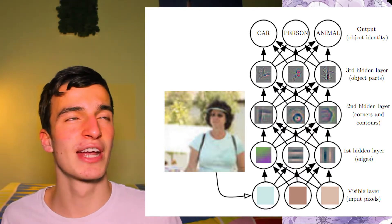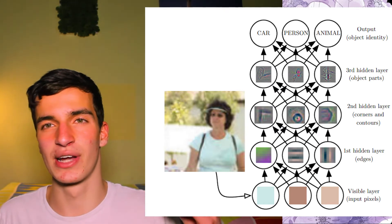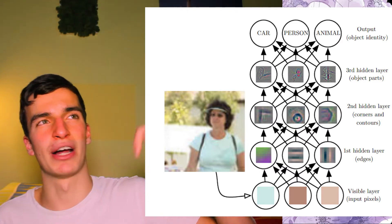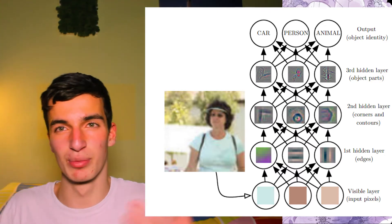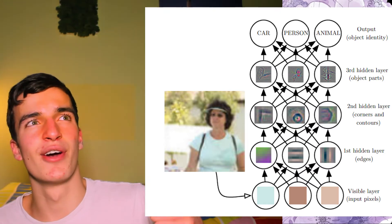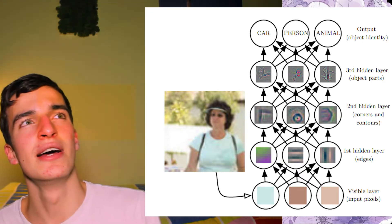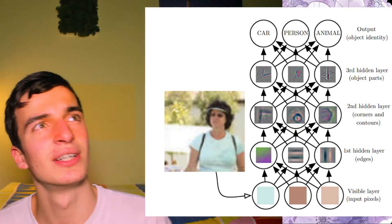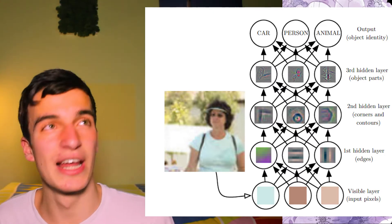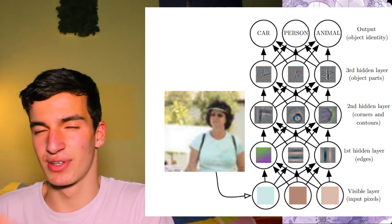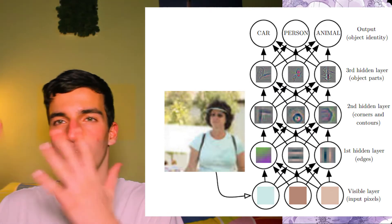In a neural network we can see multiple layers. At the bottom are the visible layers, which are the input pixels. The first hidden layer recognizes the edges of the image, the second hidden layer recognizes corners, and the third hidden layer recognizes objects and parts. The output layer recognizes the whole object. So it starts with very basic things like pixels and edges, and builds up from there.